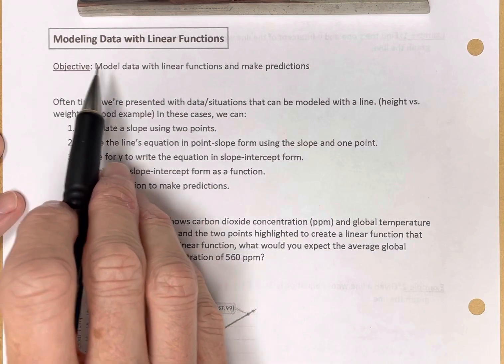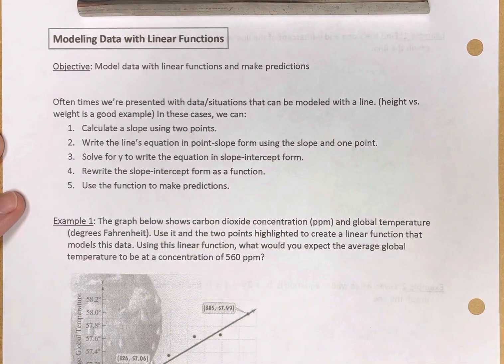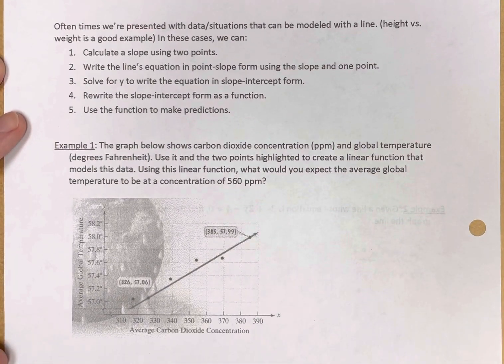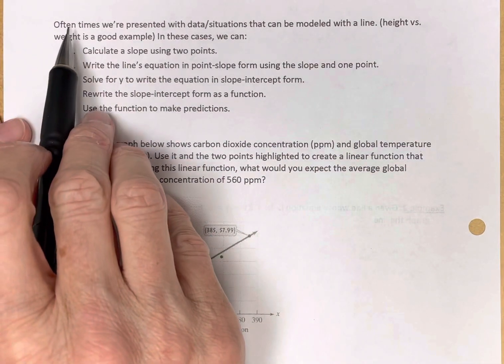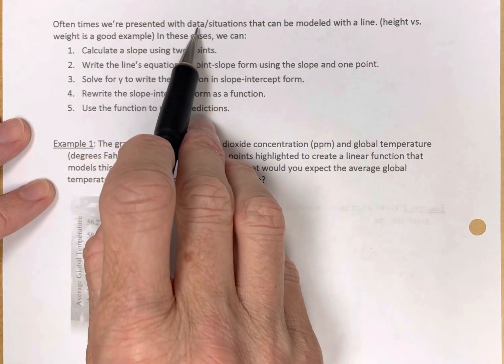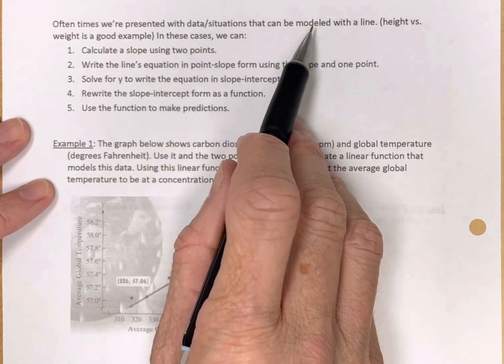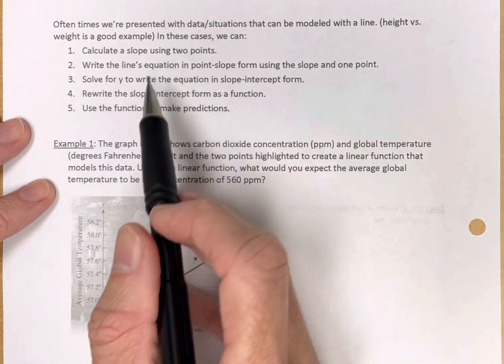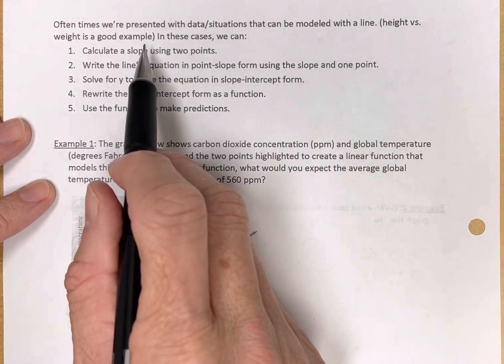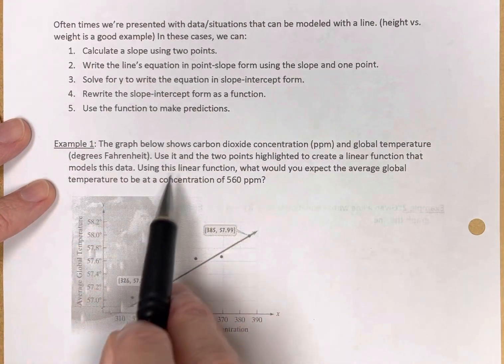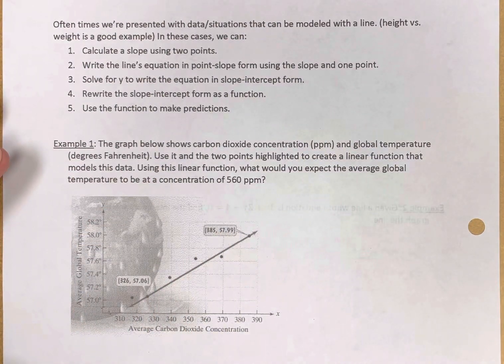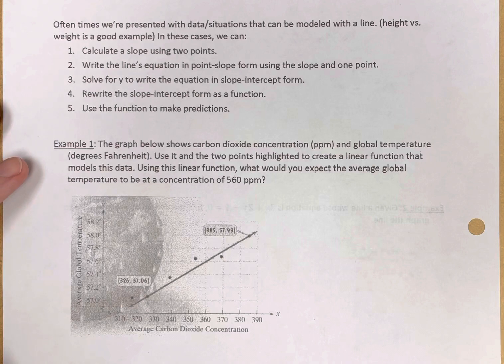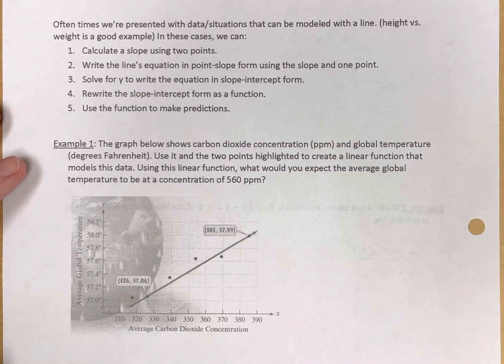So that's our objective again. We want to model data with a linear function and make predictions. Oftentimes we're presented with data or situations that can be modeled with a line. For example, height and weight. As your height increases, your weight increases and a line is often a good fit for height and weight. Modeling it with a linear equation, be able to draw a line that fits the data.